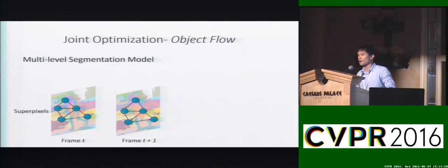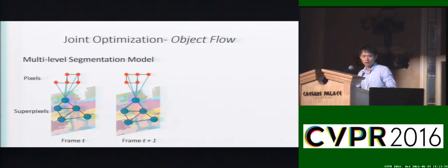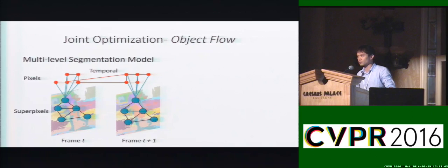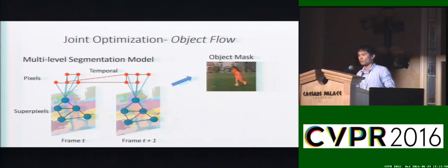For the segmentation model, we first start by generating superpixels, then construct a graph to connect the superpixels. We also connect pixels within each superpixel to obtain fine boundary details. Then temporal connections are constructed between pixels in adjacent frames. We solve this graph to estimate the object mask.